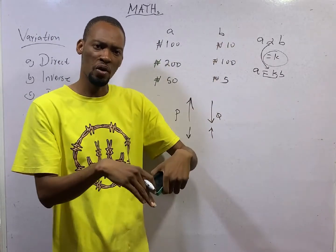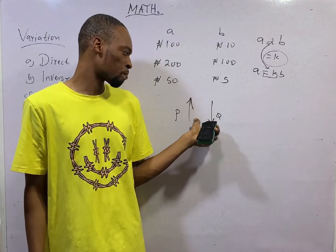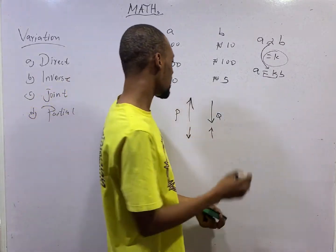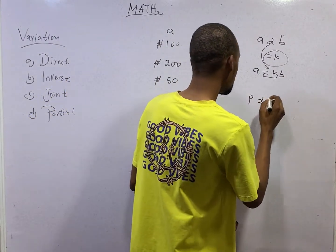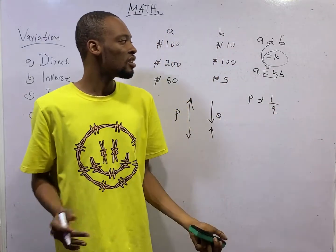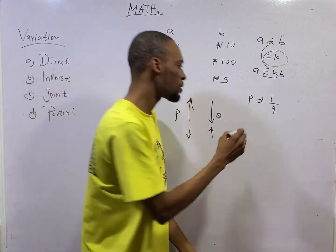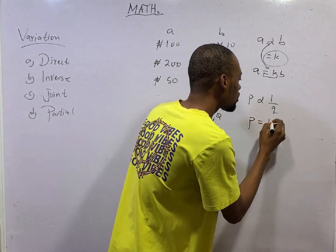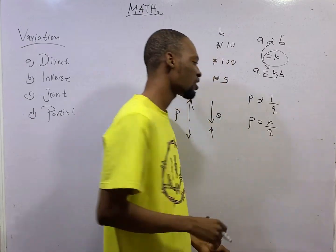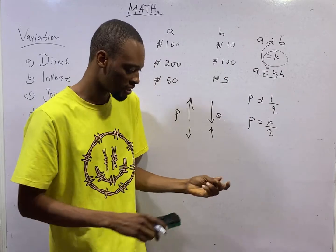As one goes up, one comes down. This is what we call inverse variation. To represent this, we can say that price is inversely proportional to quantity. And as usual, introducing equal to, this becomes P equals K over Q. This is inverse. As one goes up, one comes down.